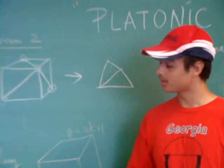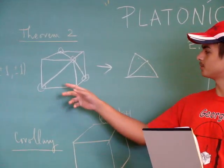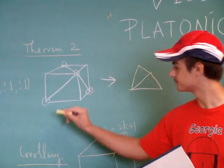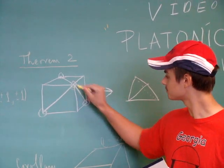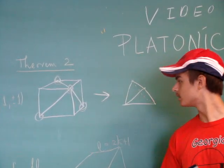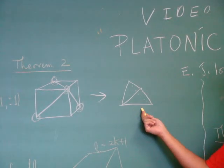But, what else we can see is, if you look at a cube, and you take every other vertex as shown right here, and you connect them, then you get a regular tetrahedron.